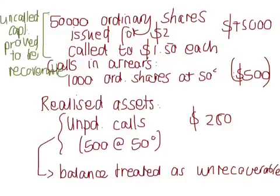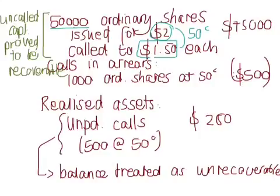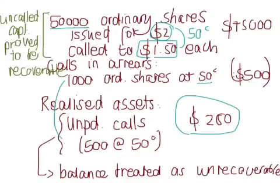Let's look at all the information in the question that relates to the forfeiture of shares. We were told in the statement of financial position under share capital that the company had 50,000 ordinary shares issued for $2 a share, but called to $1.50 — so there's a further 50 cents that can be called. There are calls in arrears for 1,000 ordinary shares at 50 cents each. Under the realisation of assets, the unpaid calls are expected to realise only $250, so only half will be recovered.